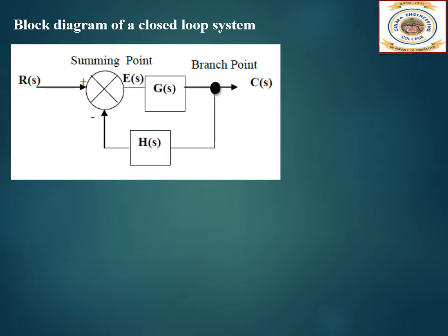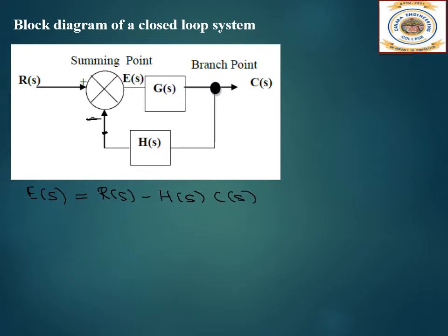Now this is a block diagram of a closed loop system. Let us find the transfer function. E(s) is the error signal — we have a summation point, different blocks, and a takeoff point. E(s) equals R(s) minus H(s)·C(s). This is a negative feedback system — if the sign is negative it is negative feedback, if positive it is positive feedback. Here H(s)·C(s) comes back, so E(s) = R(s) − H(s)·C(s).